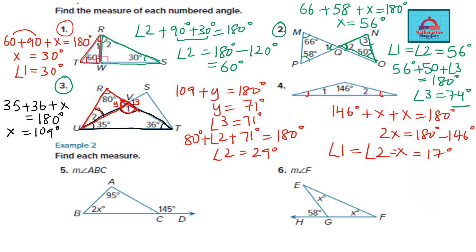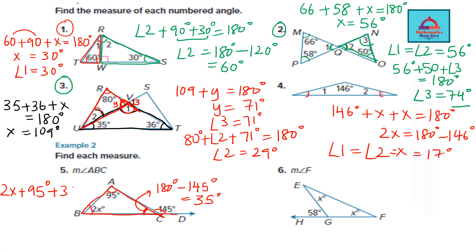Try solving questions 5 and 6 yourself and check your answers in the next slide. For question 5, one angle of the triangle is 2x, another is 95. The third angle is calculated as 180 minus 145 = 35, because 145 and that angle form a linear pair. So: 2x + 95 + 35 = 180, giving 2x = 50, and x = 25 degrees.